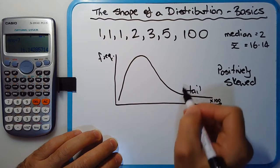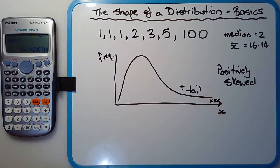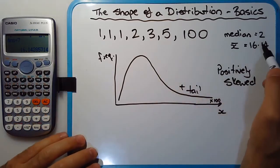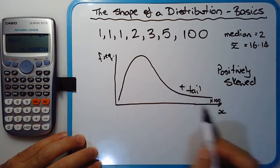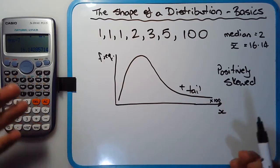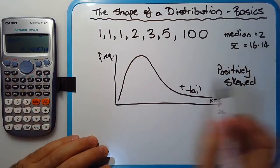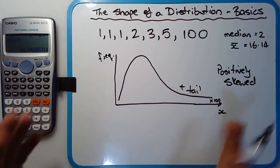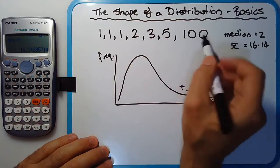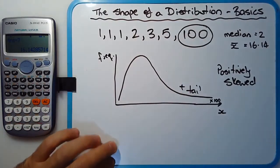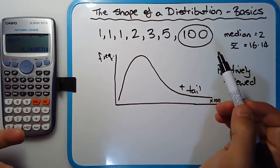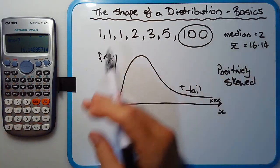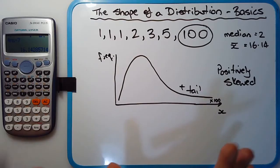We have a positive tail on the right-hand side. So in this instance, when the mean is significantly higher than the median, there's a good chance this is the shape of the distribution. Why is this of importance? Well, if there's a tail or the distribution is lopsided or skewed, then questions need to be asked — where did this 100 come from? Because clearly it's way off from all the other scores, and that raises questions. Analysing the shape of the distribution gives us a very clear picture as to what is going on.